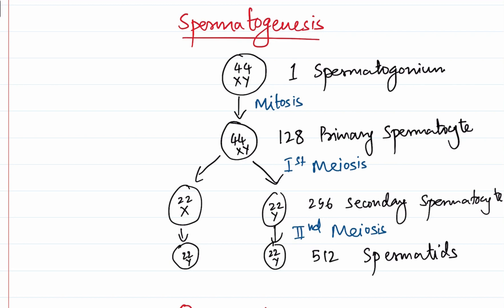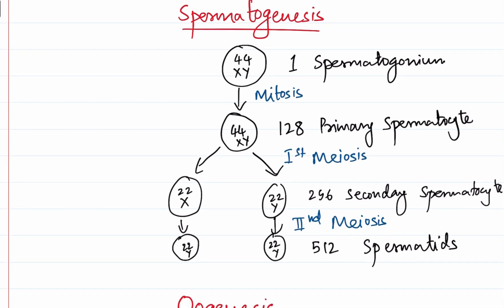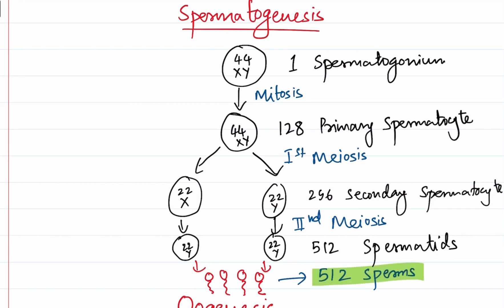These 512 spermatids will develop into our sperms. So from one spermatogonium, we will have 512 sperms in the end. This is the process of spermatogenesis. The process by which spermatids develop into sperm is what we call spermiogenesis.